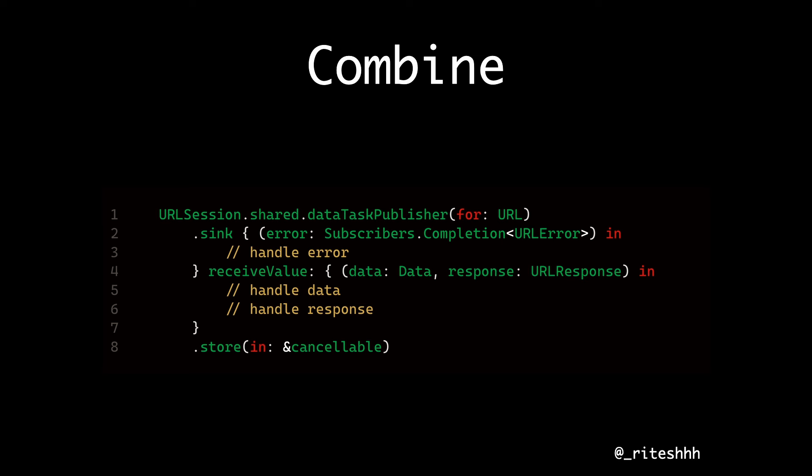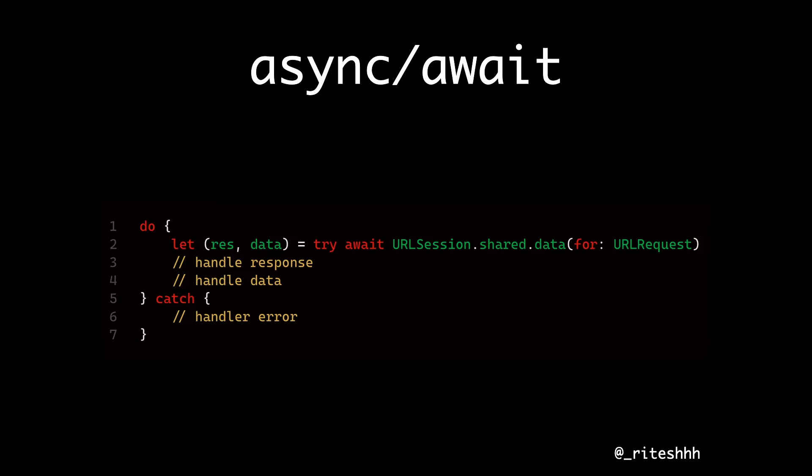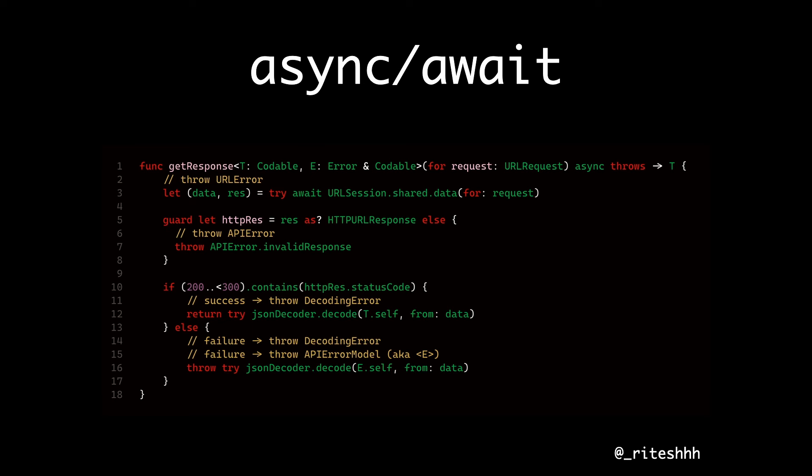In typical Combine code, you have a publisher and then listen to the values. The first callback gives you an error callback — you can type-safely specify it's a URLError, and there's also a completion callback. But in async/await code, you have to catch it, and the catch block type-erases all your errors, which is not ideal. A real example looks like this — you can have multiple errors thrown: a URLError, an APIError, a DecodingError, or something else.